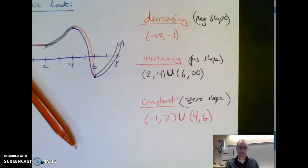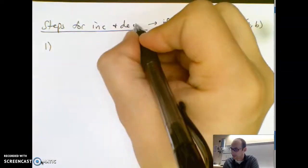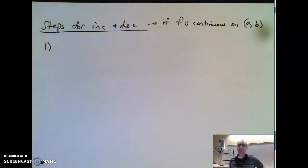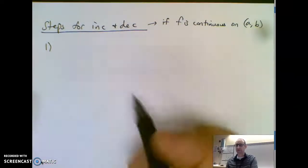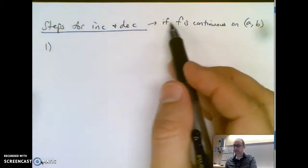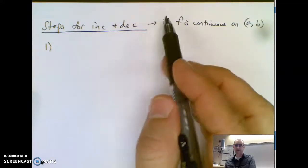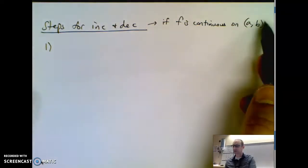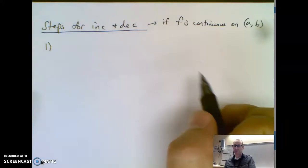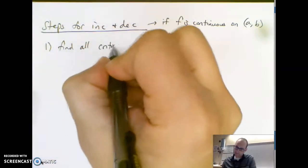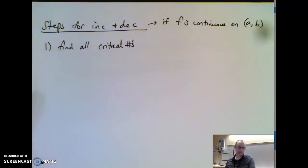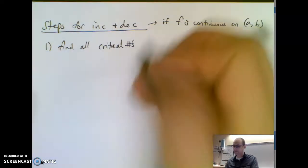On the next page we're going to do the steps to find where your graph is increasing and decreasing. These steps will be extended further as we build our graphing system. One precursor: all these rules only work if f is continuous on your interval, with parentheses — you don't include the endpoints. Step 1: find all critical numbers, which you may remember from mean value theorem and Rolle's theorem — it's when your derivative is zero or undefined.